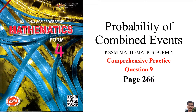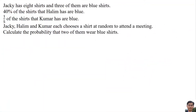Probability of Combined Events — Form 4, Practice Question 9, Page 266. Jackie has 8 shirts and 3 of them are blue. 40% of the shirts that Halim has are blue. 1 over 5 of the shirts that Kuma has are blue. Jackie, Halim, and Kuma each choose a shirt at random to attend a meeting. Calculate the probability that exactly 2 of them wear blue shirts.